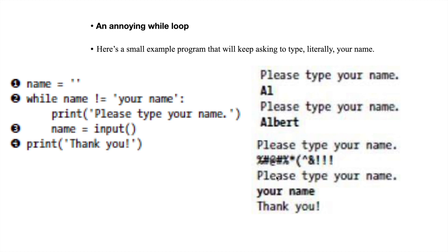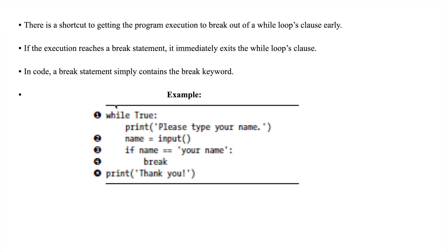Suppose if you don't give the string 'your name' it keeps on asking you to enter the name, but I want to come out of that — how to do that? By using a break statement. While True — this is a shortcut for getting the program execution to break out of a while loop early. If the execution reaches a break statement, it will immediately exit the while loop. In code, a break statement simply contains the break keyword.